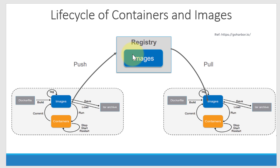The image created from a Dockerfile or from a running container can be pushed into a repository within the registry. A registry is a simple application that provides the facility for users to push images into it, and at the same time, other users can pull the same image and use it to create further containers.